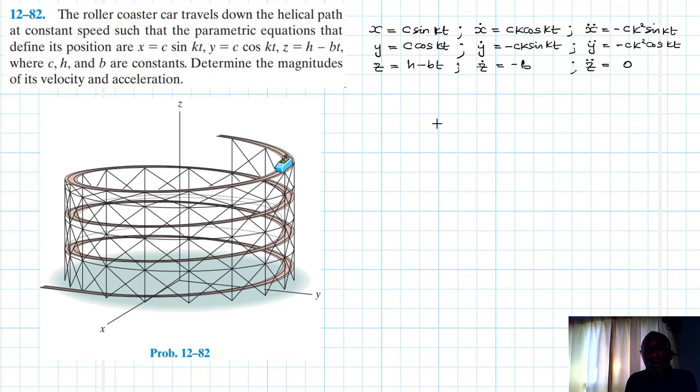Right, so with this information we can simply say the magnitude of our velocity for this roller coaster is just equal to the square root of x dot squared plus y dot squared plus z dot squared.